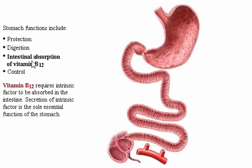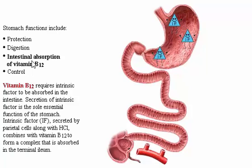Vitamin B12 requires intrinsic factor to be absorbed in the intestine. Secretion of intrinsic factor is the sole essential function of the stomach. Intrinsic factor, secreted by parietal cells along with acid, combines with vitamin B12 to form a complex that is absorbed in the terminal ileum.